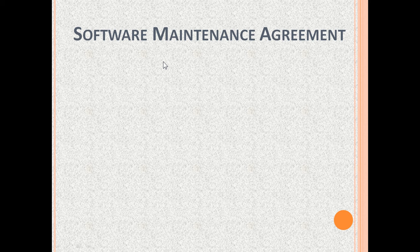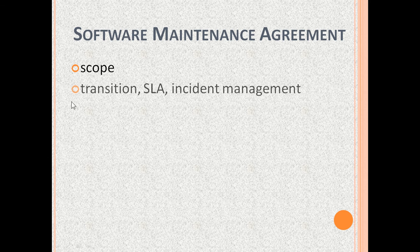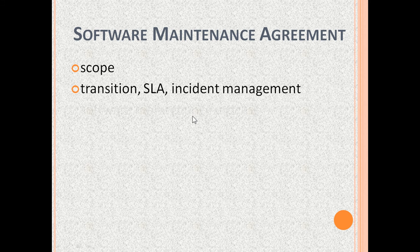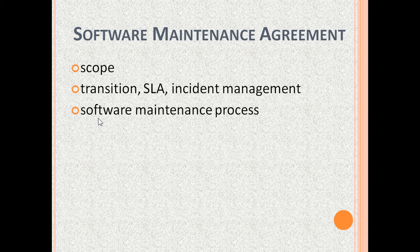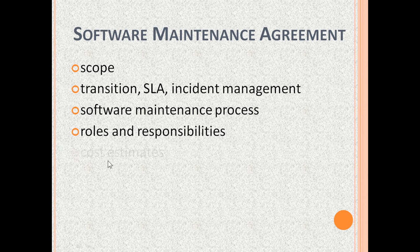Software maintenance is planned and agreed with the help of a software maintenance agreement. This document states the scope of software maintenance. It also mentions transition — meaning training from the software developers to the maintenance team, setting up help desk, etc. Service level agreements and incident management: incident management means receive requests, log the requests, prioritize them, send them to the responsible role and track them until they are closed. The software maintenance agreement also mentions the software maintenance process, roles and responsibilities in the maintenance team, and cost estimates.